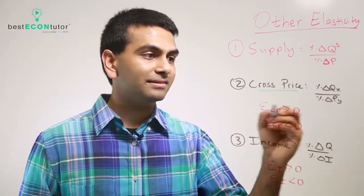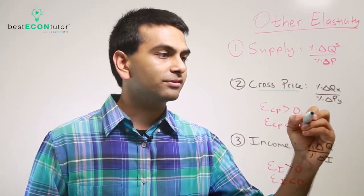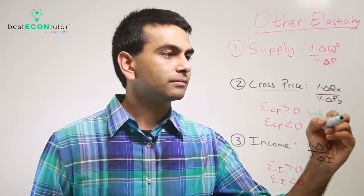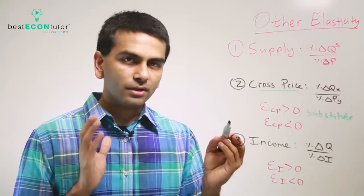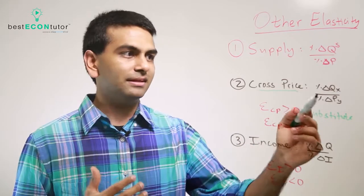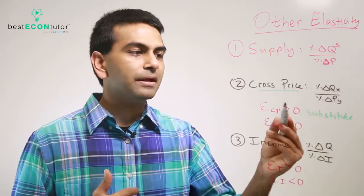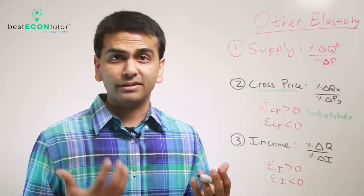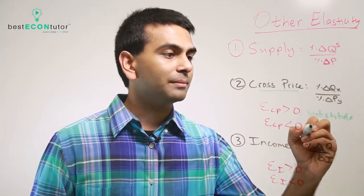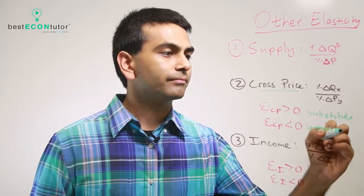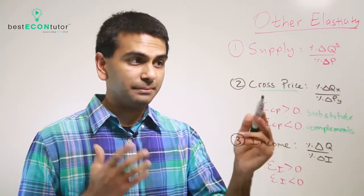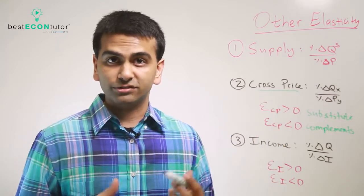So if your cross-price elasticity is a positive number, the two goods are called substitute goods. On the other hand, if it's a negative cross-price elasticity, that's like regular demand elasticity where the price goes up and you want less of the good. For example, if milk becomes expensive, you also want a lower quantity of cereal — those goods are complements. So cross-price elasticity being positive or negative tells you whether two goods are substitutes or complements.